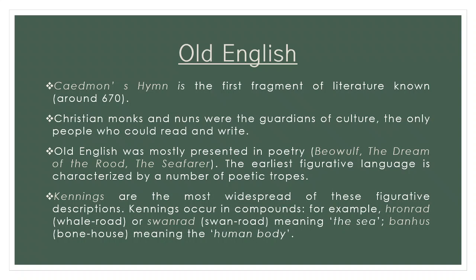The first fragment of literature is known as Caedmon's Hymn. It dates from the late 7th century and is the first song of praise in English culture and the first Christian religious poem in English, although many Latin hymns were known at that time. It was preserved by the monks of Whitby. Christian monks and nuns were the guardians of culture, as they were virtually the only people who could read and write before the 14th century. Interestingly, most of the native English culture they preserved is not in Latin, the language of the church, but in Old English, the language of the Angles, Saxons, and Jutes.